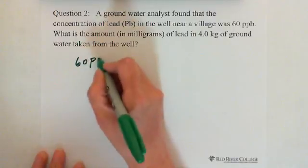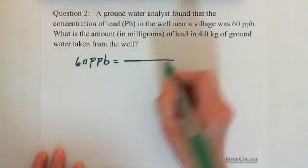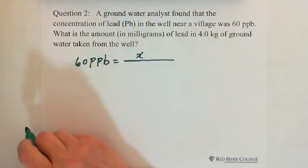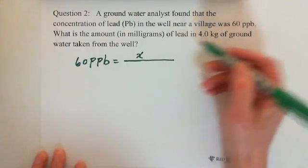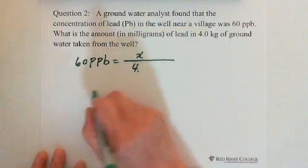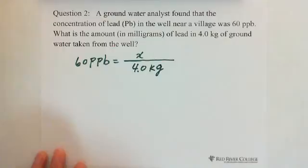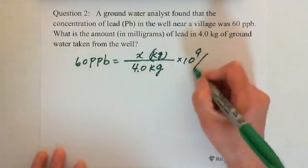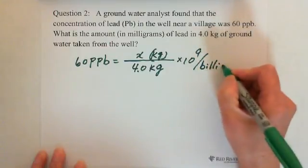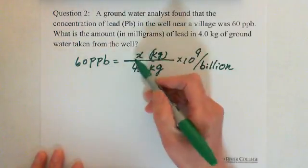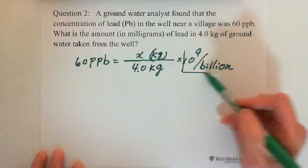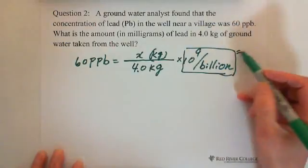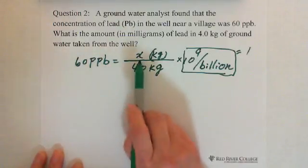We write: 60 PPB equals X milligrams — we can convert milligrams later — over 4.0 kilograms ground water, so we have the same unit top and bottom, multiplied by 10 to the 9th exponent per billion. In this case, since billion equals 10 to the 9th exponent, this equals 1. So we just work with 60 PPB equals X over 4 kilograms.